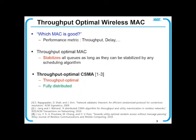Returning to the MAC protocol issue, there can be various target performance metrics, such as throughput and delay. A few years ago, the notion of throughput optimal MAC was defined, which stabilizes all queues as long as they can be stabilized by any scheduling algorithm. Recently, there has been a breakthrough where throughput optimality can also be achieved by just locally controlling the CSM parameters. It is called triple-optimal CSM.